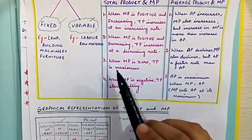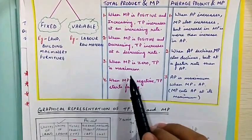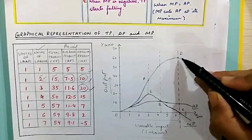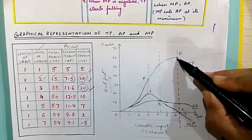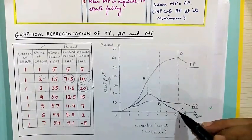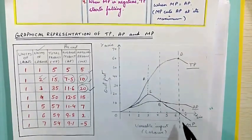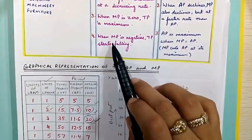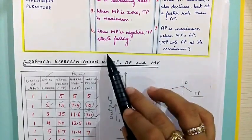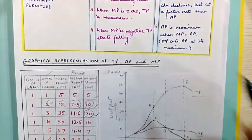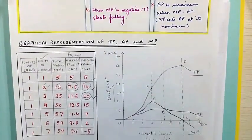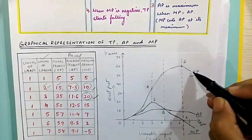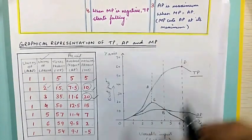Third point: when MP is 0, TP is maximum. Total product is maximum at that point when MP is 0. And when marginal product is negative, total product starts falling.